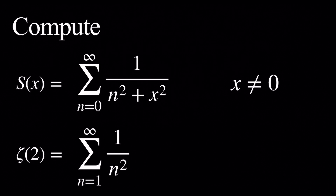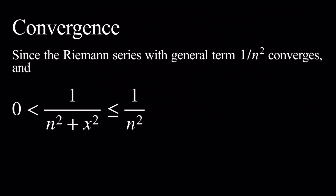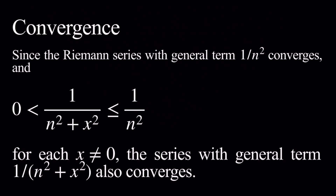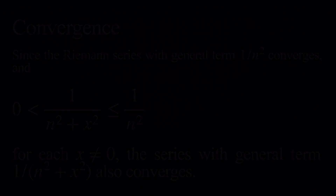Obviously, the second sum is convergent. Now let's look at the convergence for the first sum. We know that the general term of the first series is bounded above by the general term of the second series. So because the second series is convergent, so is the first series. Now let's compute s of x. To compute s of x, we're going to use Fourier series.